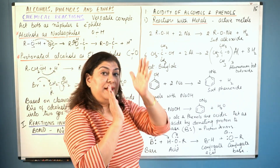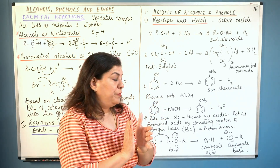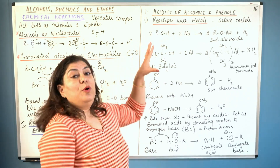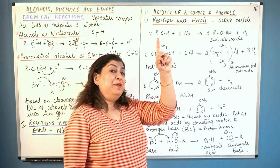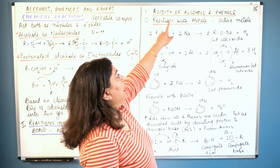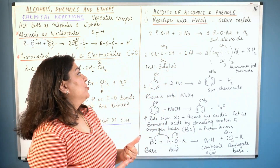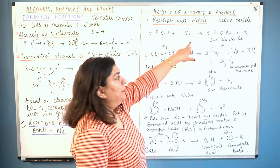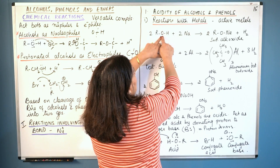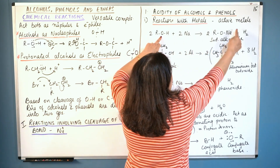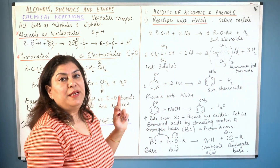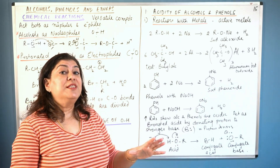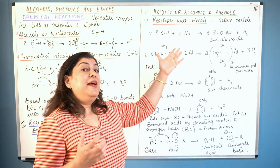Since H⁺ was given out — and H⁺ is a hydrogen ion or proton — alcohol gave H⁺, therefore alcohol is an acid. Regarding the acidity of alcohols and phenols: these reactions show they act as acids. When acids react with metals they liberate hydrogen, so when alcohols react with active metals like sodium, aluminum, or potassium, hydrogen is produced. When ROH reacts with sodium, the O-H bond breaks, sodium joins the oxygen forming sodium alkoxide (a salt), and hydrogen is liberated.